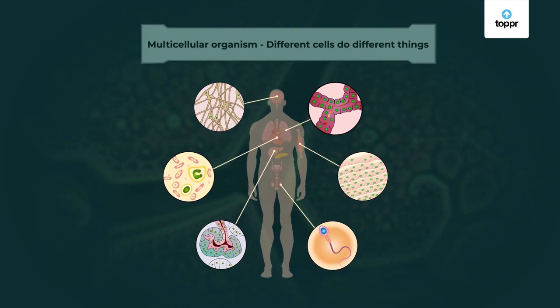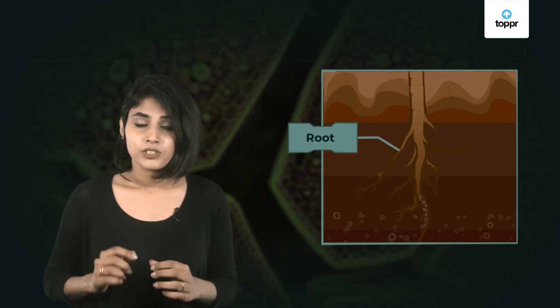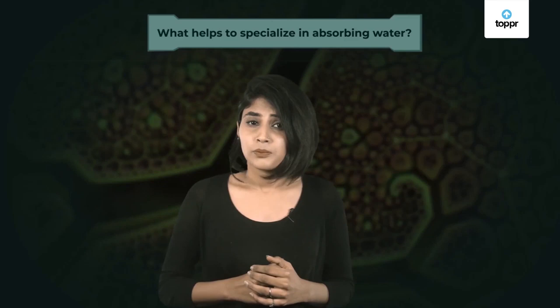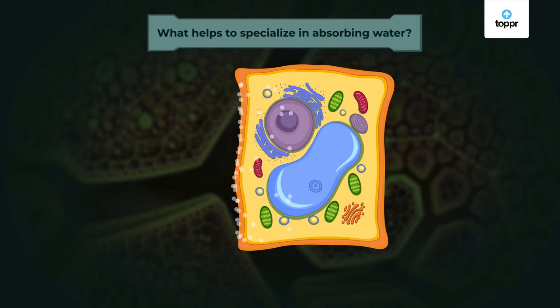According to the job they have, different cells have different designs. For instance, we all know what a typical plant cell looks like. Let's say this cell is present in the root — it has to specialize in absorbing water. What design changes would help? First of all, the cell wall of a typical plant cell is too thick to let water pass through, so the cell wall has to be quite thin. This way, water and minerals can get in.